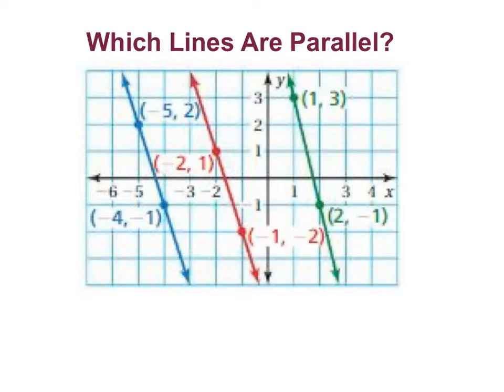All right, let's look at another example to determine which of these lines are parallel. So again I'm going to use rise over run, and I'll start with the blue line. I'll start at the bottom point: I rise up 1, 2, 3, and I run 1. So my slope is 3 over 1, and it's negative.